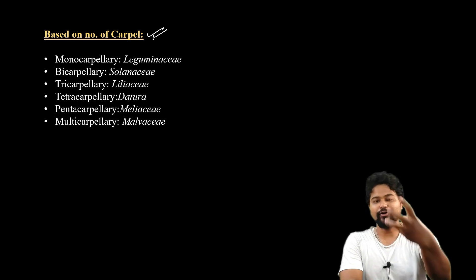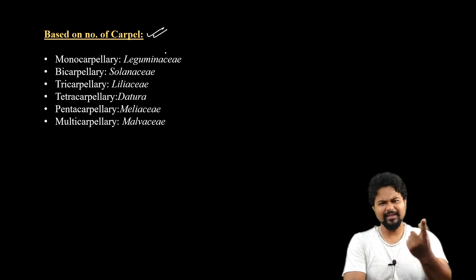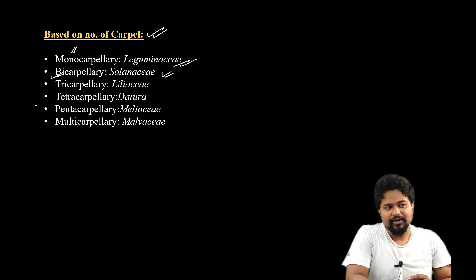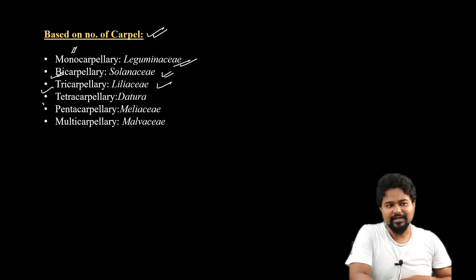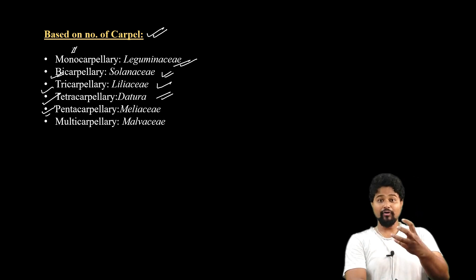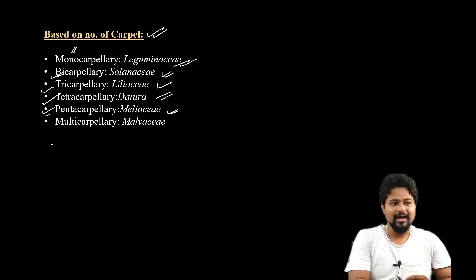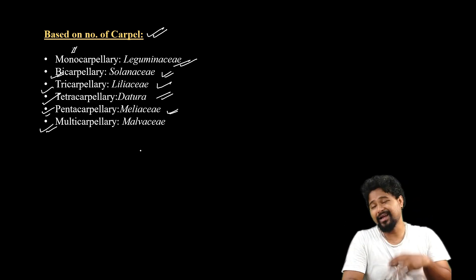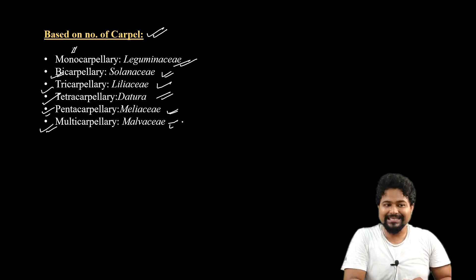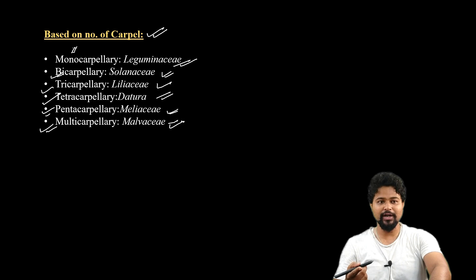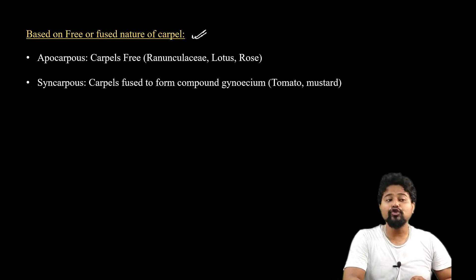Based on the number of carpels, they are given different names. Monocarpellary means a single carpel — example: Leguminosae. Bicarpellary means two carpels — example: Solanaceae. Tricarpellary means three carpels — example: Liliaceae. Tetracarpellary means four carpels — example: Datura. Pentacarpellary means five carpels — example: Malvaceae. Multicarpellary means many carpels — also seen in Malvaceae family.